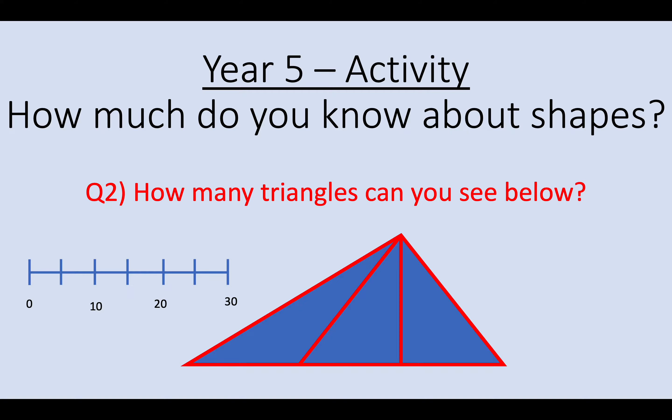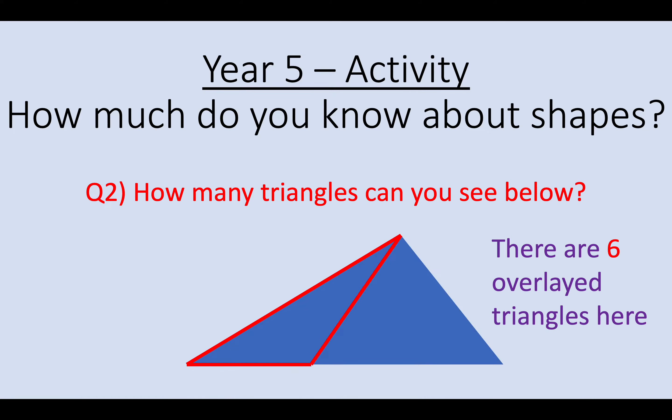Question 2. How many triangles can you see below? Okay so this wasn't a trick question but there are triangles that are overlaid and your answer should be 6. Let's have a look. So 1, 2, 3, 4, 5 and the big one giving you 6. So your answer to question 2 was 6.